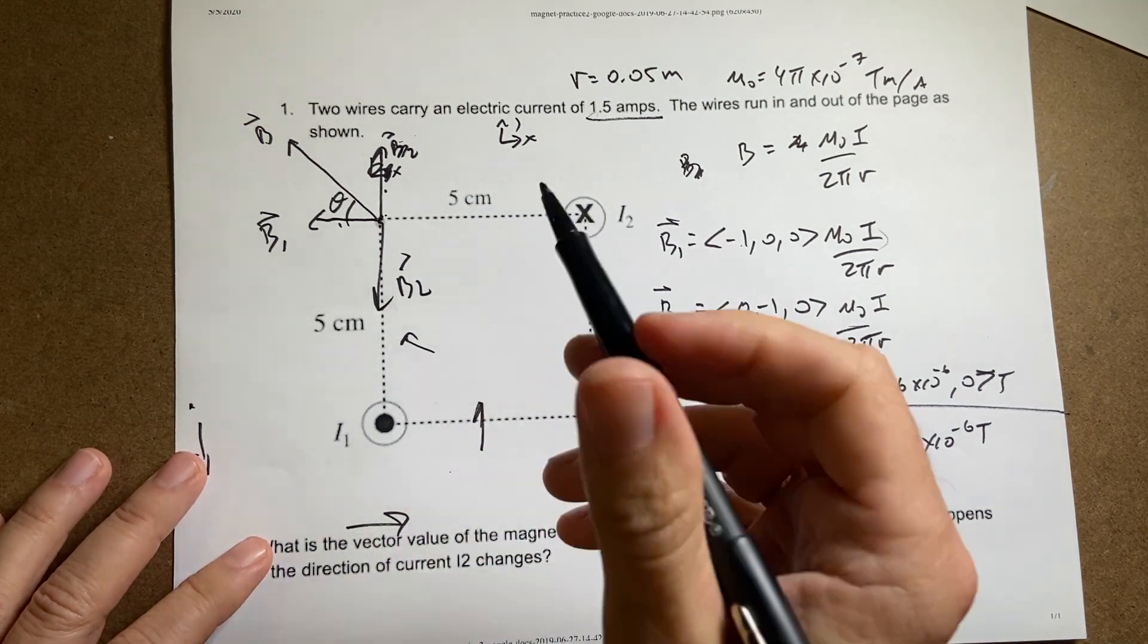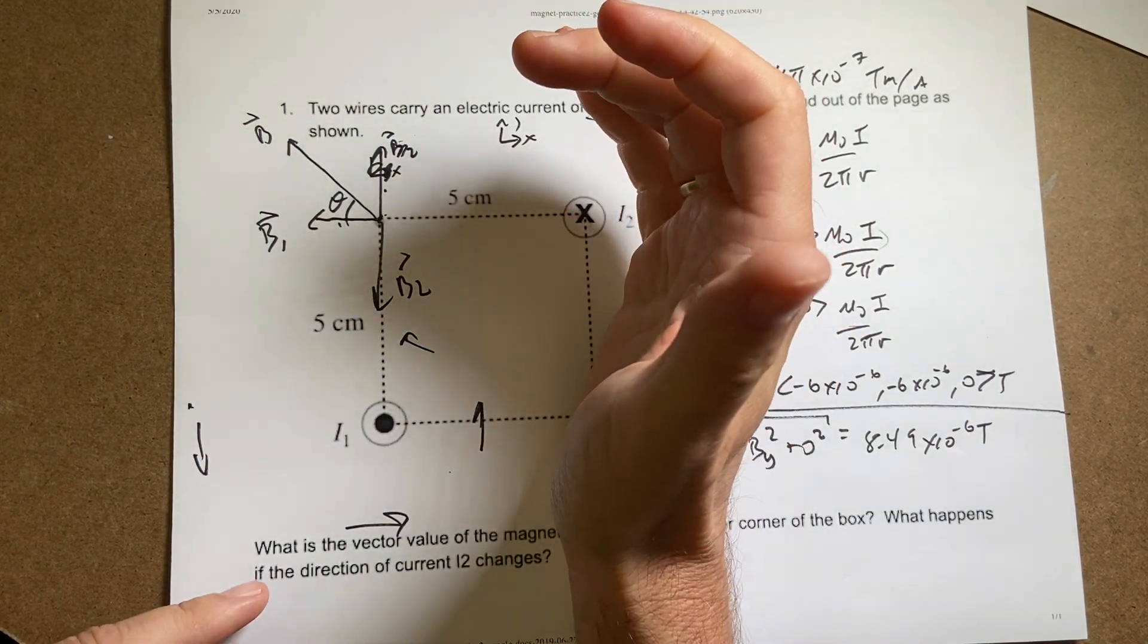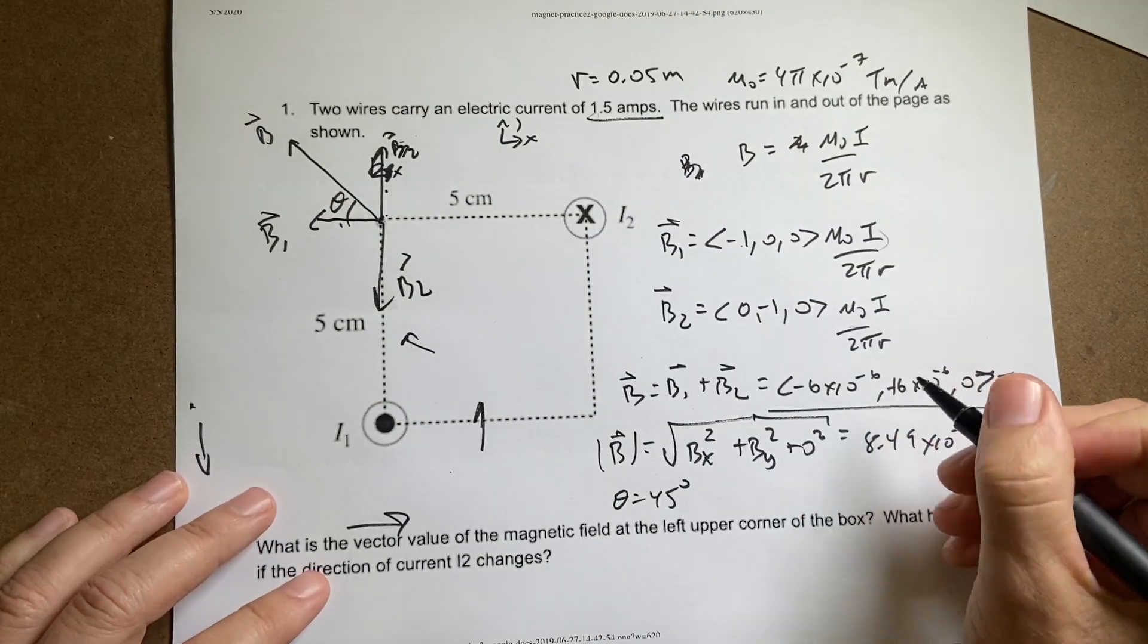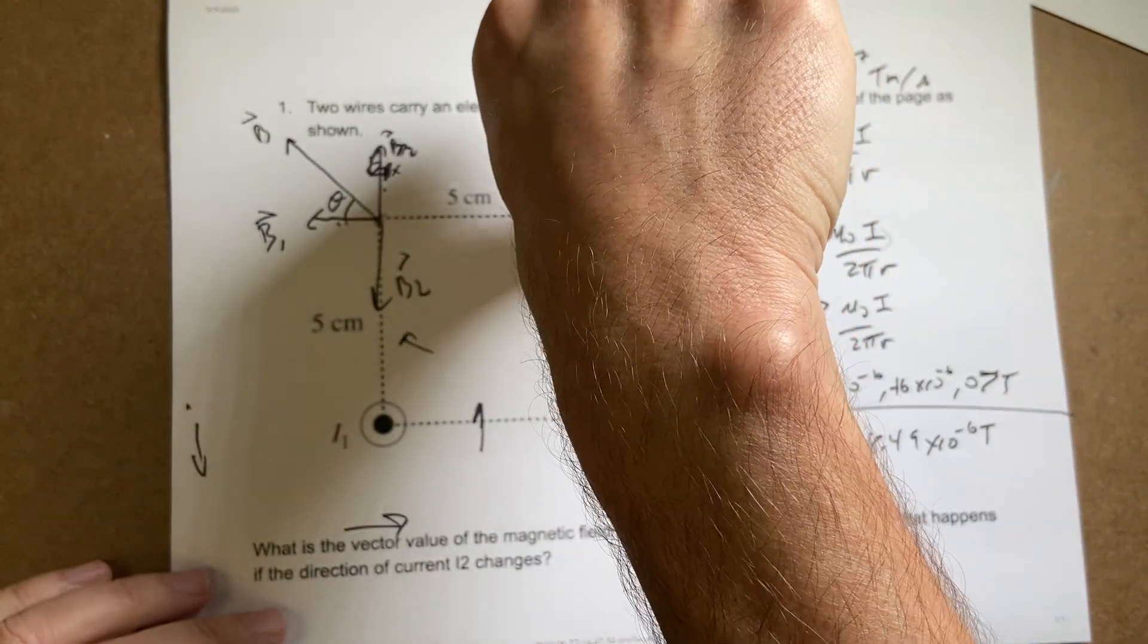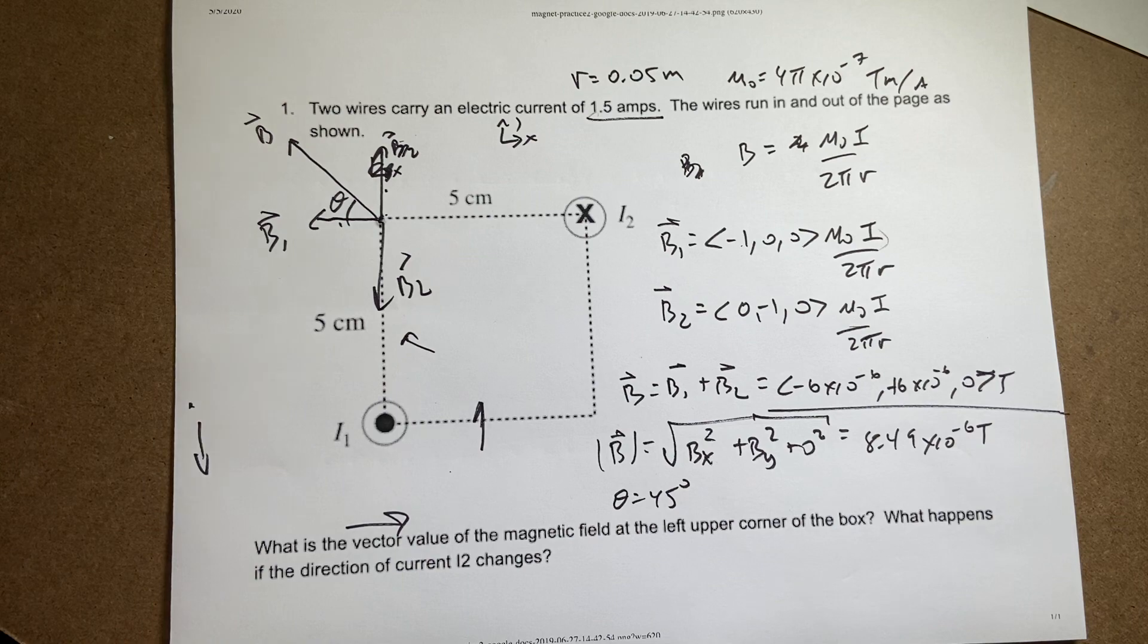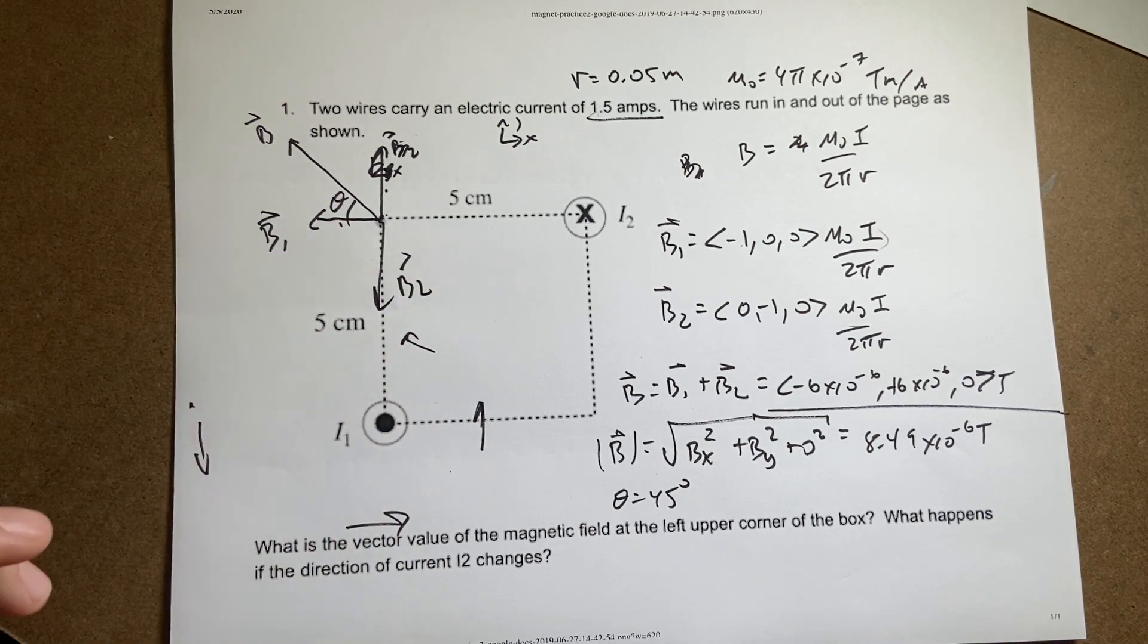Okay. But if I change that to coming out, then... No, I did that right. If it's going into the paper, then it would be going up. If it's coming out, then it would be down. And I'd just change the sign. That's it. Okay. Physics people. Another physics problem later. See you later.